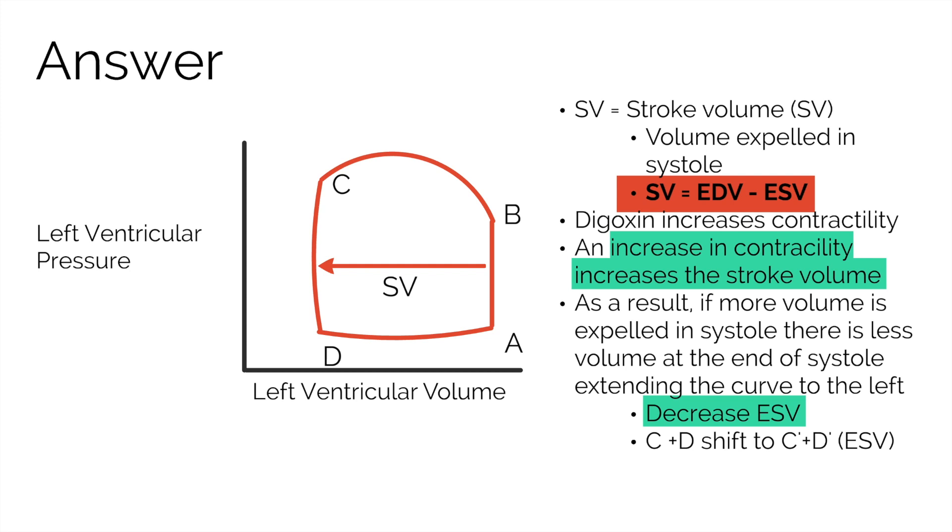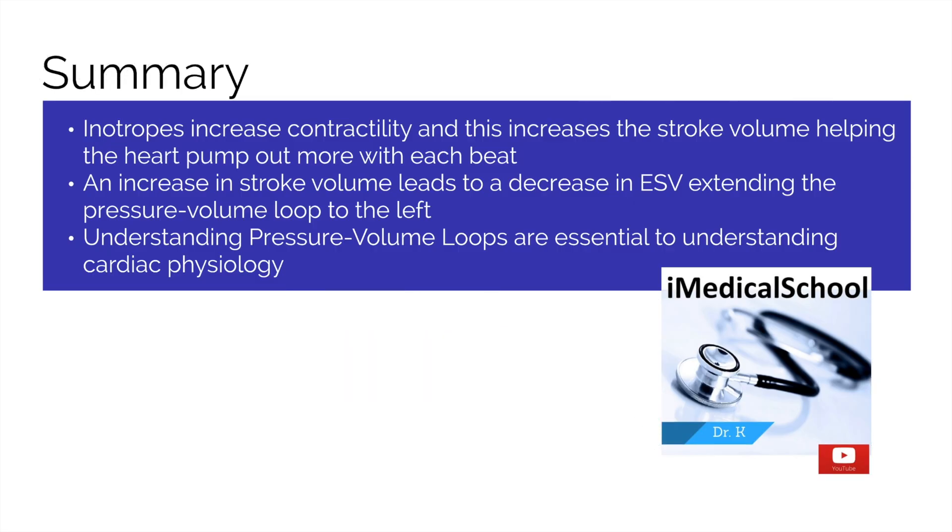Though end diastolic volume is the same as digoxin does not affect filling, but end systolic volume is decreased due to a greater contraction being produced, thus increasing the stroke volume. As a result of these changes, the pressure-volume loop extends to the left, represented by C' and D'. In the end, remember that inotropes increase contractility and thus the stroke volume. An increase in stroke volume decreases the end systolic volume, extending the pressure-volume loop to the left.